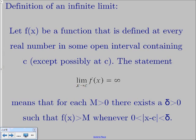A more formal definition: if f of x is a function defined at every real number in some open interval where your c value is contained, except the function doesn't have to be defined where x equals c, then the statement that the limit as x approaches c of f of x equals infinity means that for every M greater than 0 — where M is just some really big positive number — there exists a delta greater than 0, such that f of x is greater than M whenever the absolute value of x minus c is less than delta.